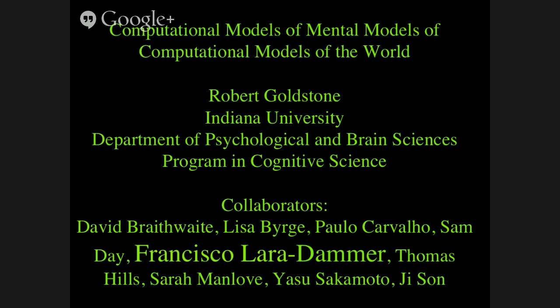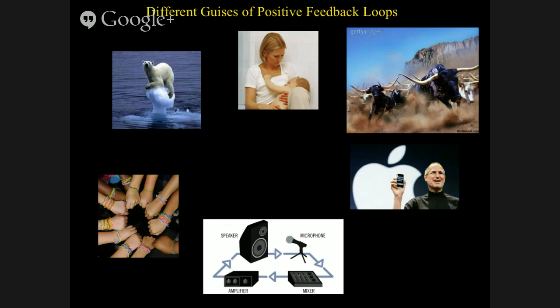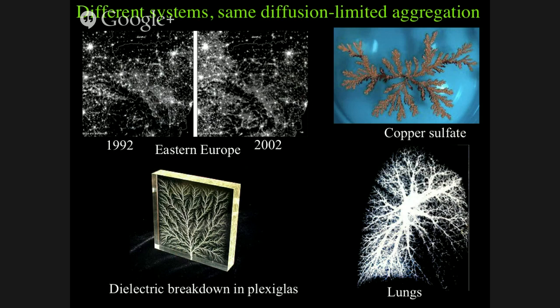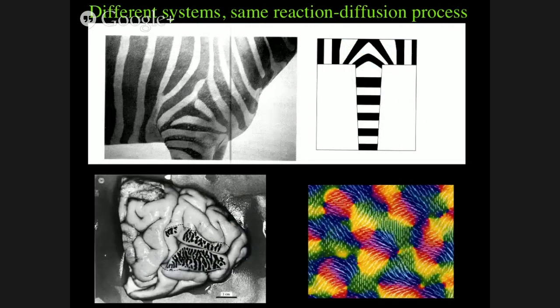What I'm going to be talking about flows well from the previous talk on trigonometric identities. We've been interested for a long time in how to get people to understand scientific principles that cut across different domains — from chemistry to physics to social sciences. For example, understanding that all of these are examples of positive feedback systems, even if they're negative phenomena like global warming. Or understanding that all of these systems are diffusion-limited aggregation, whether large scale like the growth of entire cities or small scale like dielectric breakdown in electricity.